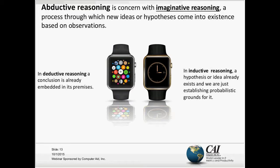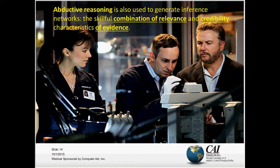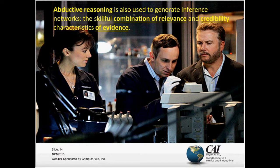If you are a fan of crime TV series — like CSI, for example — you've been exposed to abduction throughout that series. It's a reasoning used to generate what we call inference networks, which can be seen as a skillful combination of the relevance and credibility characteristics of evidence. Evidence has to be both credible and relevant to support a particular theory. In a crime scene investigation, that's what they do throughout every episode — finding evidence that is both credible and relevant to a particular case.